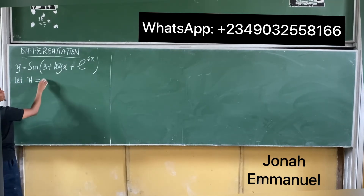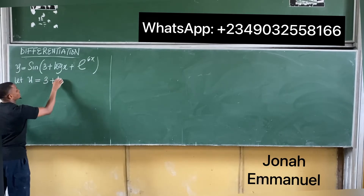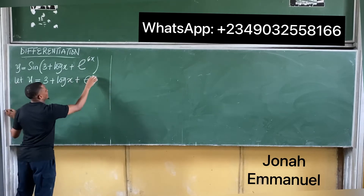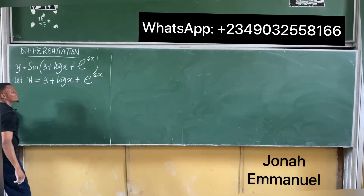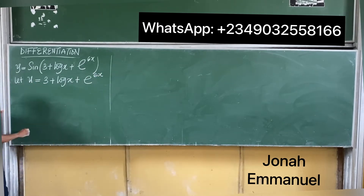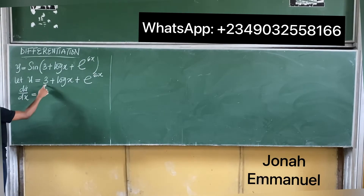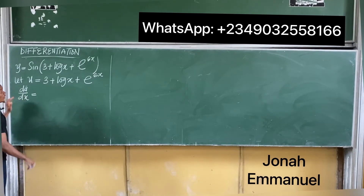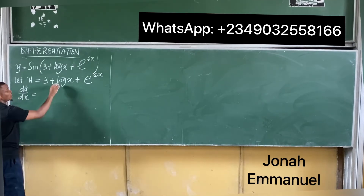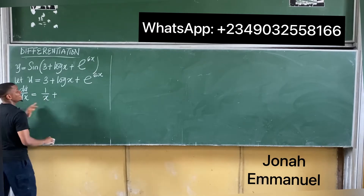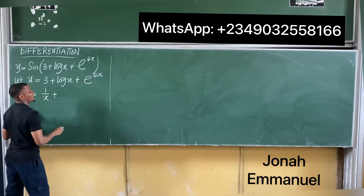So u equals 3 plus log x plus e^(6x). Next, differentiate u with respect to x: du/dx equals — the constant gives zero, differentiate log x gives 1/x, plus differentiate e^(6x).